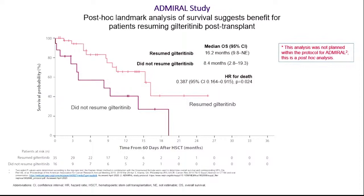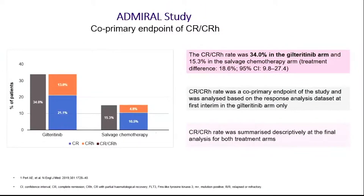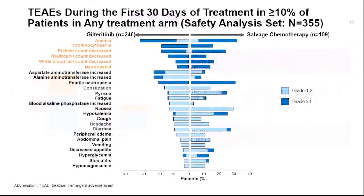The co-primary endpoint, CR/CRh, was clearly better in the giltretinib group compared to the salvage group — 34% versus 15% — though giltretinib continued while intensive chemo was only one to two months. Regarding side effects in the first 30 days, cytopenia was almost comparable between the two groups, perhaps slightly more neutropenia in the chemotherapy group, but more transaminase elevation in the giltretinib group compared to salvage chemotherapy.